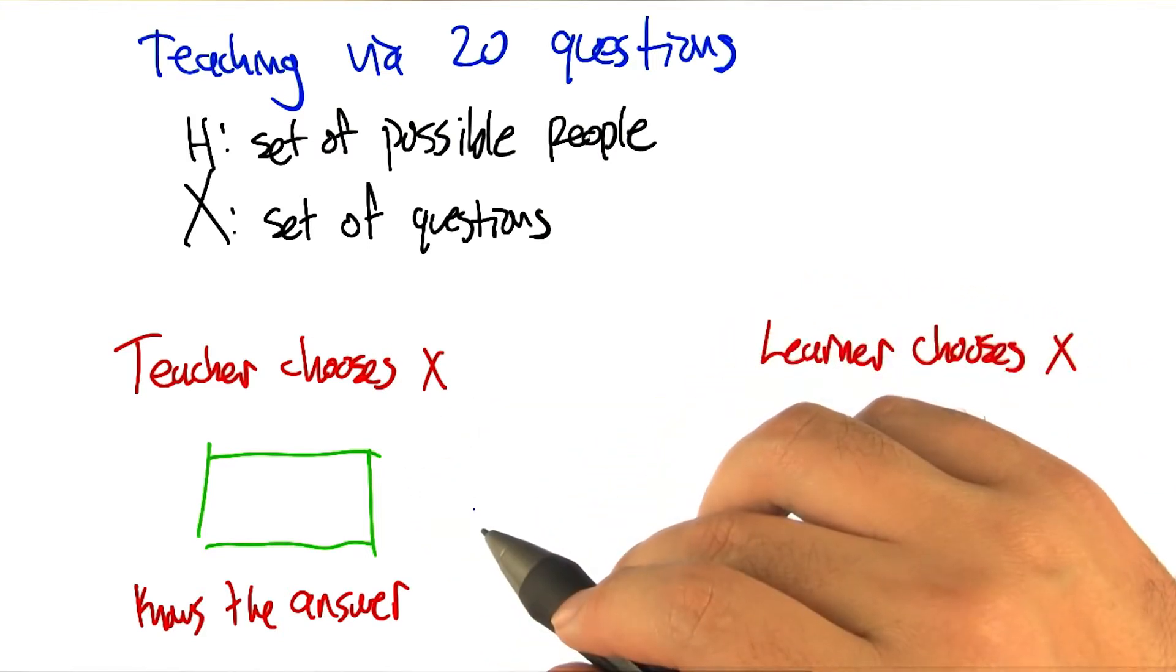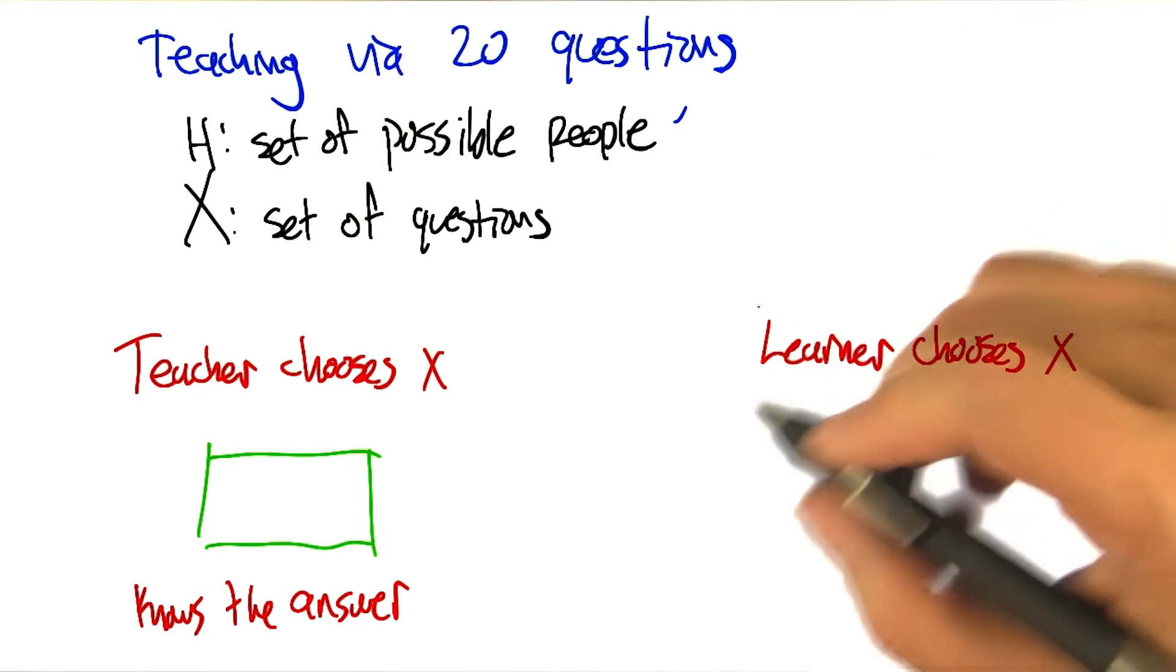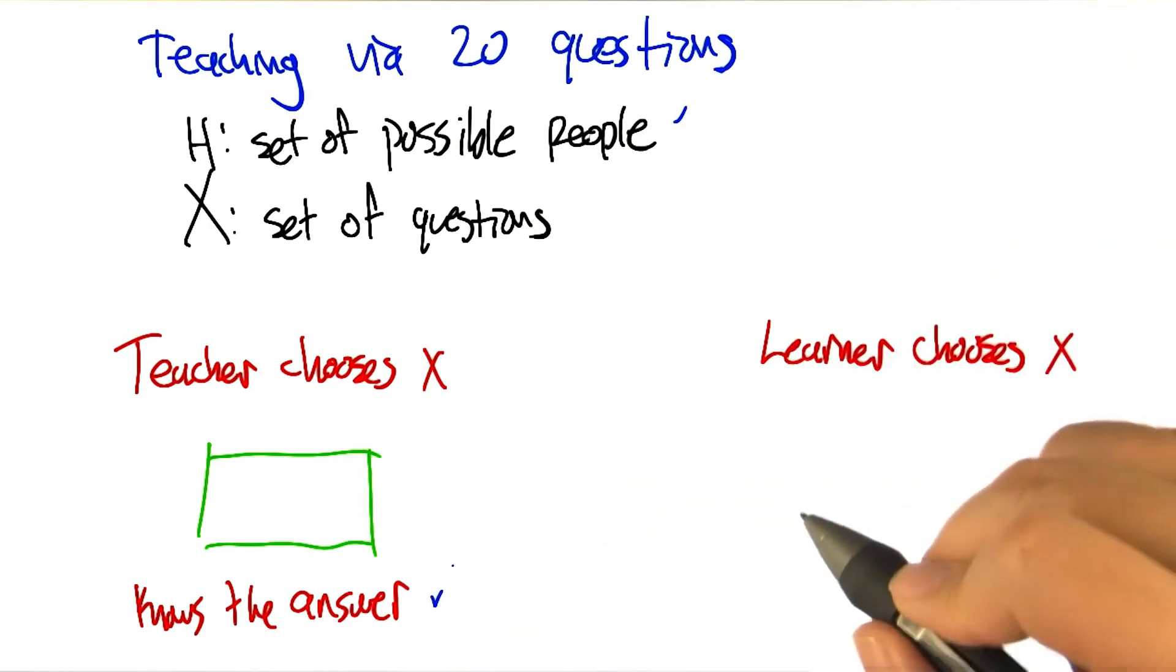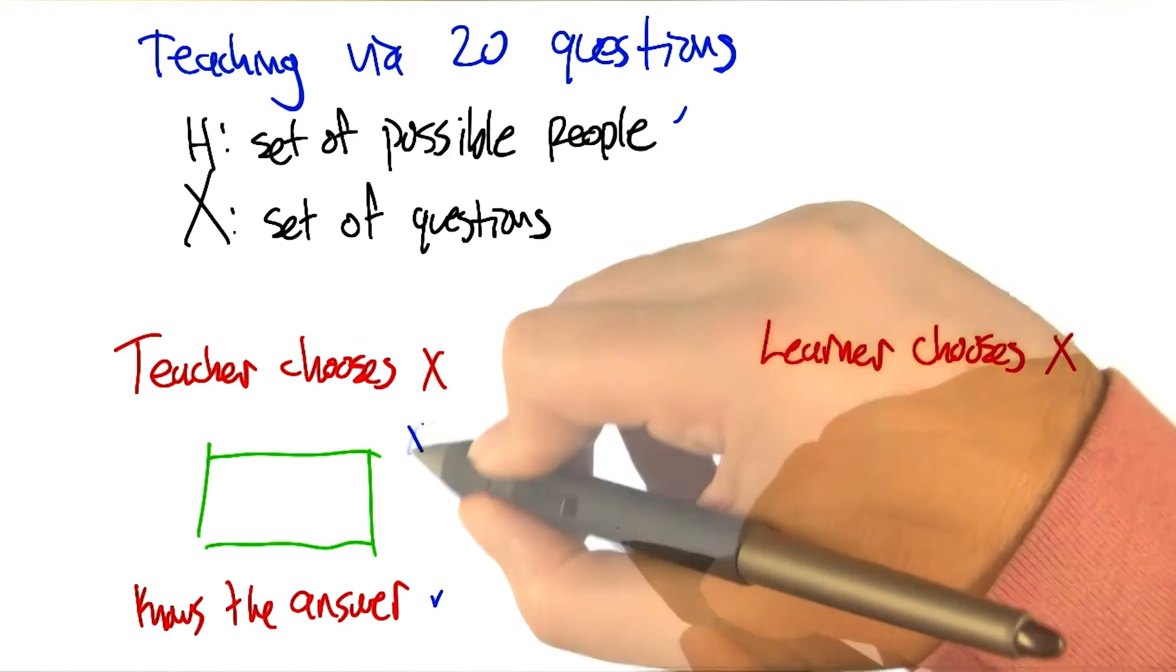For 20 questions? Yeah. So if we think of the set of possible people as being these sort of hypotheses, and you know which of the hypotheses is correct and which is wrong, then, presuming the teacher can keep all this in her head, I guess the right thing to do would be to always pick an X such that it gets rid of as many of the hypotheses as possible.